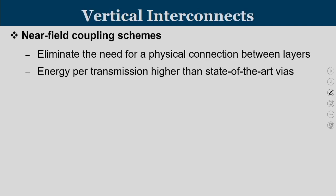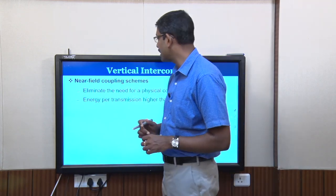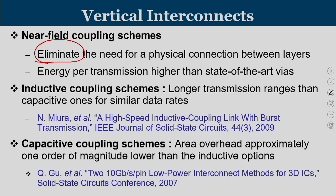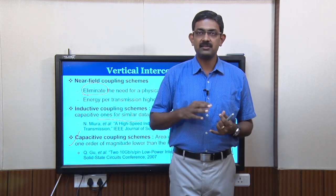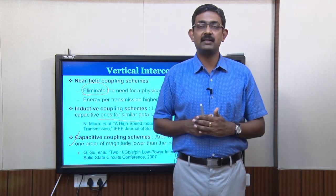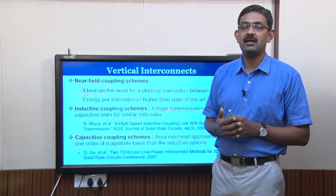In 3D NOC we have vertical interconnects, and these interconnects can be made without physical connections. We can use near-field coupling schemes which eliminate the need for physical connection between layers. Two mechanisms are: inductive coupling for longer transmission ranges, and capacitive coupling to eliminate the overhead. By closer vicinity of inductive and capacitive coupling, we can transfer data from one layer to another in a 3D NOC without through-silicon wire.